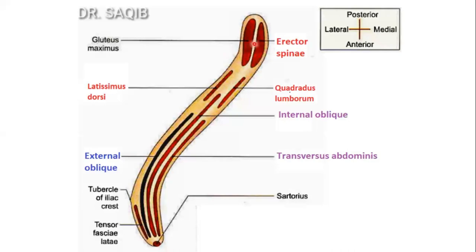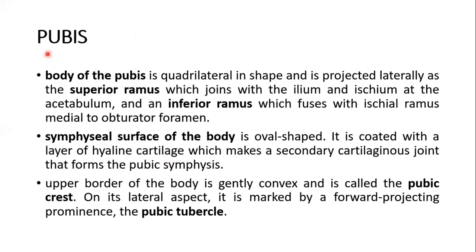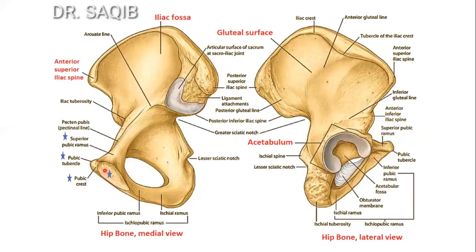Now the pubis. The body of the pubis is quadrilateral in shape and is projected laterally as the superior ramus, which joins with the ilium and ischium at the acetabulum, and an inferior ramus which fuses with the ischial ramus medial to the obturator foramen. The inferior ramus of the pubis and the ramus of the ischium are together called the ischiopubic ramus.